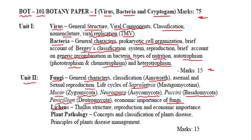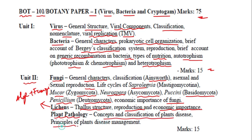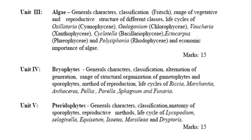In lichens, we will discuss the thallus structure, reproduction, and economic importance. Lichens include both algae and fungi in symbiosis. Plant pathology covers the concept and classification of plant disease and principles of plant disease management. This unit will also carry 15 marks.